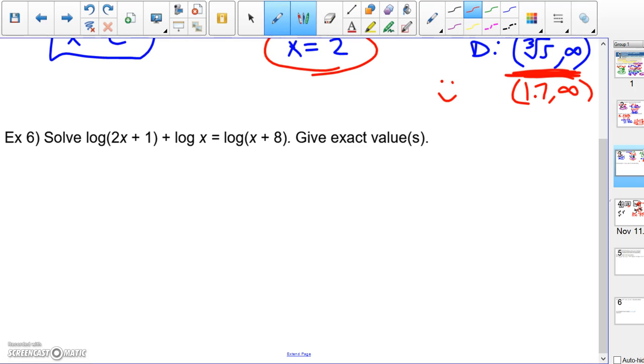Example six has three different log parts. And so for the domain, you're going to have to take each of the arguments and say 2x plus one must be greater than zero, and x must be greater than zero, and x plus eight must be greater than zero. I'm going to wait and do the domain part last. Let's do the solving part first.